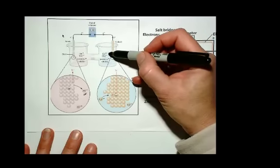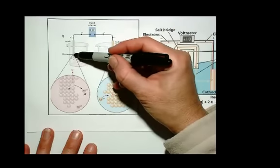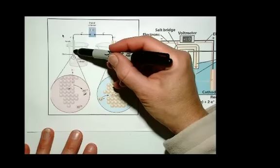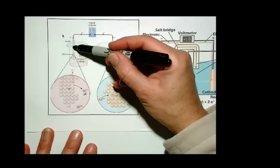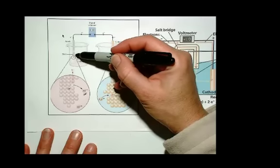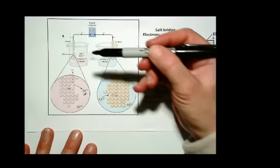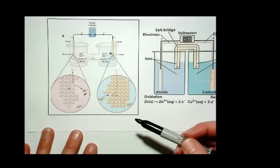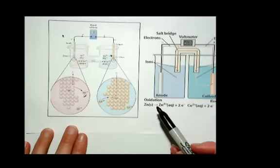Here the zinc electrode, the anode, will actually get smaller because right at the surface, the electrons are moving off of the zinc, and the individual zinc atoms are changing into zinc ions and going into the solution.